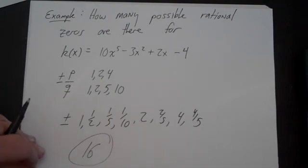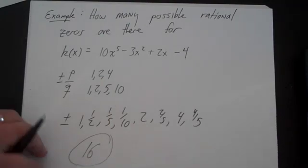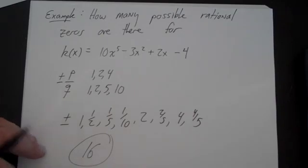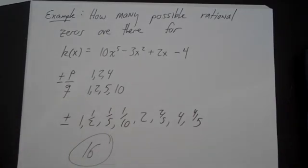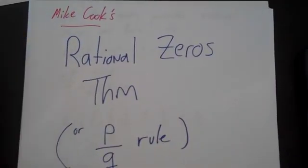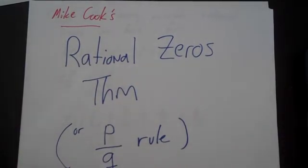There may in fact be no rational zeros at all, but all rational zeros are among these 16. That's called the rational zero theorem — or more colloquially, the PQ rule.